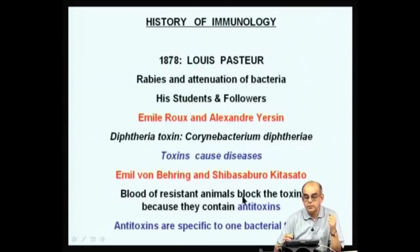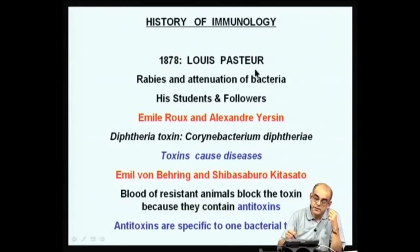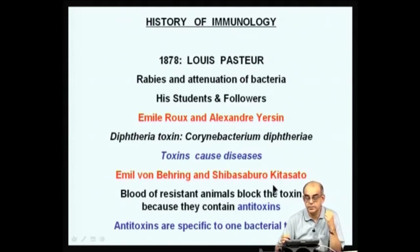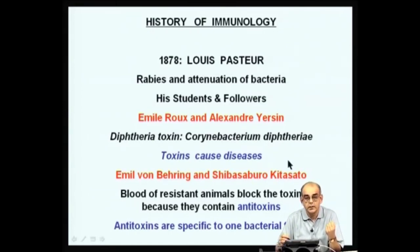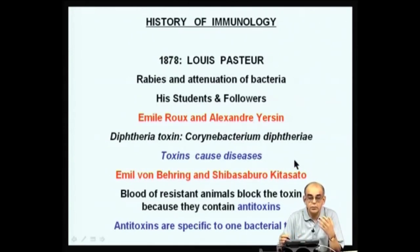Going on in the history of immunology — in 1878, subsequent to Edward Jenner, it was Louis Pasteur, a great name in your textbooks. He is known for his rabies vaccine and the attenuation of bacteria. His students and followers, Emile Roux and Alexandre Yersin, also contributed a lot to the development of immunology. They were working on Corynebacterium diphtheriae — diphtheriae deriving from diphtheria, meaning throat. This particular organism grows in the throat of newborns, yet this growth in the throat actually kills the newborn.